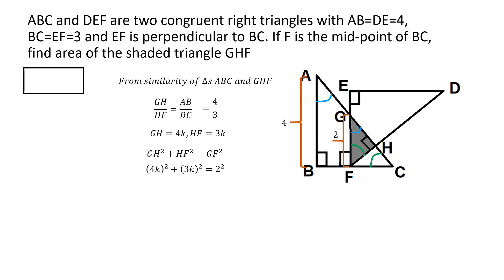So if we evaluate the left-hand side, that comes to 25K square. And the right-hand side is, of course, 4. And from this, we can solve for K. So K square is 4 by 25, and that makes K equal to 2 by 5.